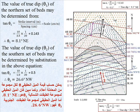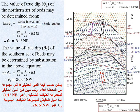The value of true dip θ₂ of the southern set of beds may be determined by substitution in the same equation: tan θ₂ = 10 / (1 × 1/20) = 0.5. Therefore, θ₂ = 26.6 degrees northwest.